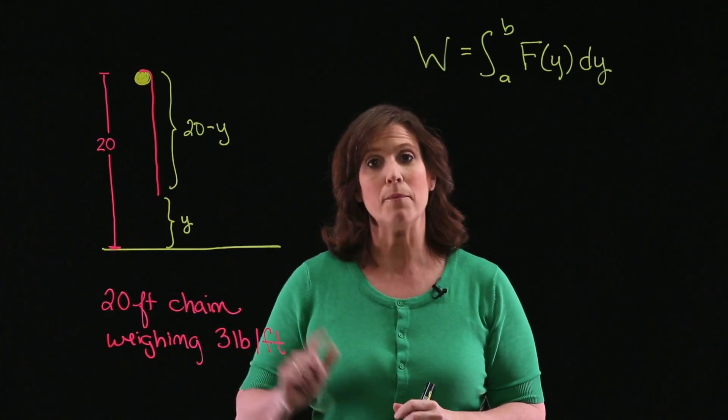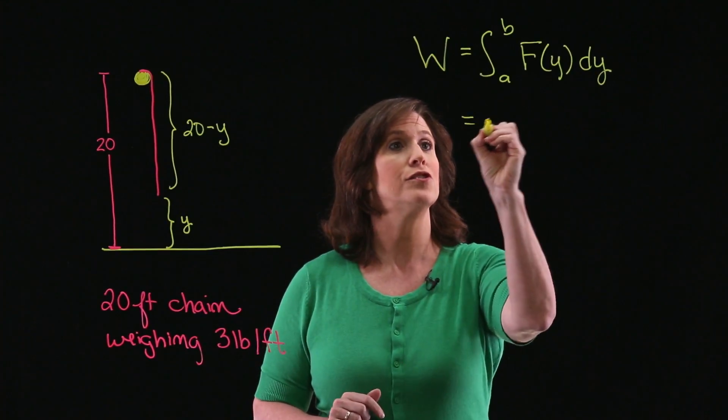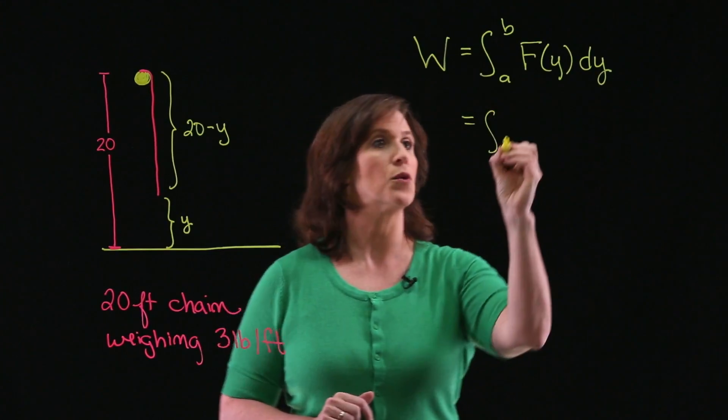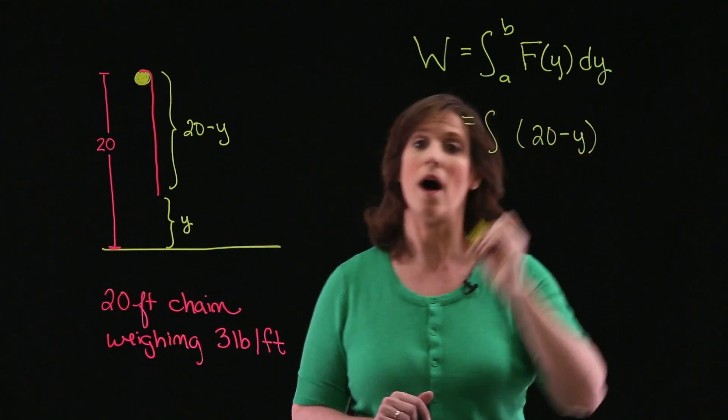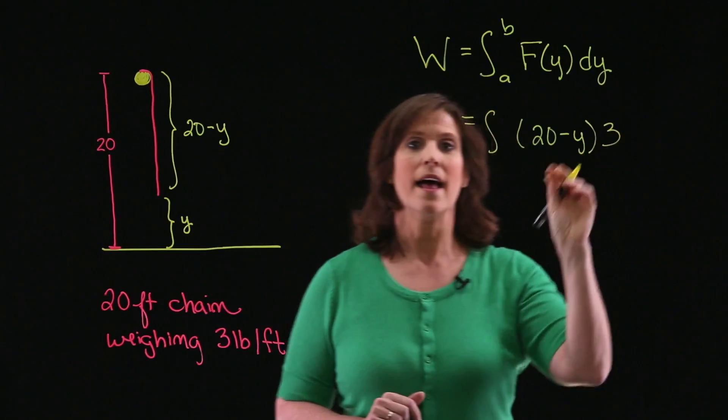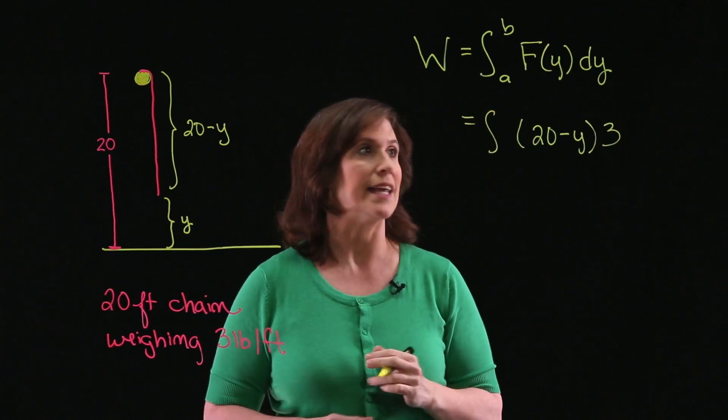We know that the chain weighs 3 pounds per foot. So my force function is going to be the amount of chain that is out, 20 minus y, times 3. That will give the weight of the chain at that moment.